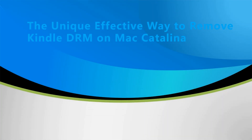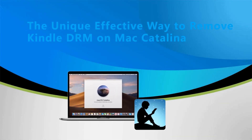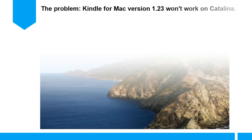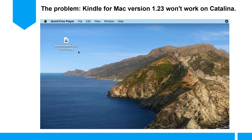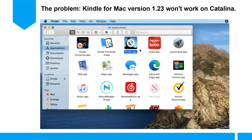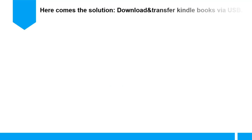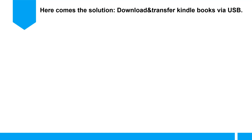The unique and effective way to remove Kindle DRM on Mac Catalina. As you see, downgrading the Kindle for Mac to the older version is not available on Mac Catalina. Here comes the solution: download and transfer Kindle books via USB.